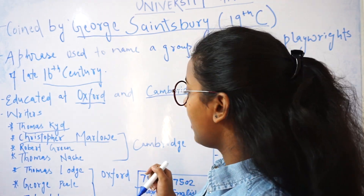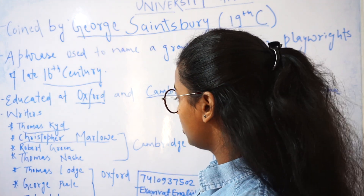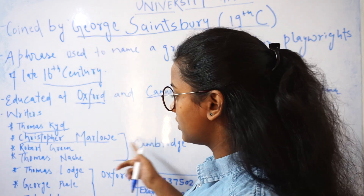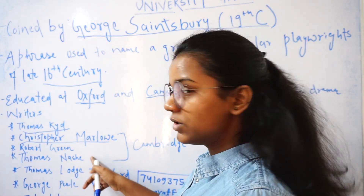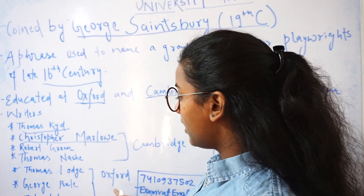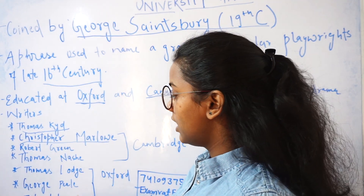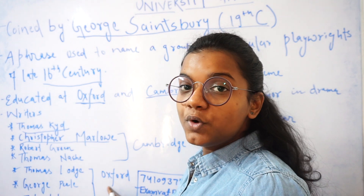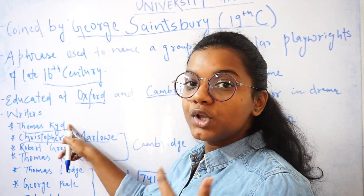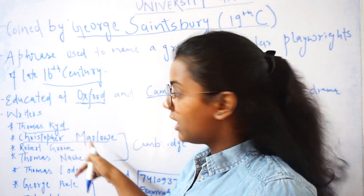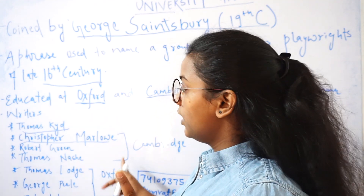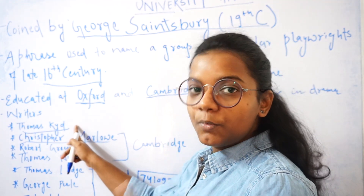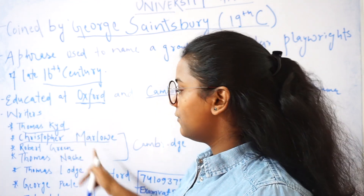We have two kinds of groups within them. First are the writers who studied from Cambridge University — those were Christopher Marlowe, Robert Green, and Thomas Nash. And the others, Thomas Lodge, George Peel, and John Lillian, were educated at Oxford University. However, there is one more point to remember: Thomas Kidd was not educated at either of these universities, but he is also included in this Wits group because his writings were mostly similar to those of the other writers.